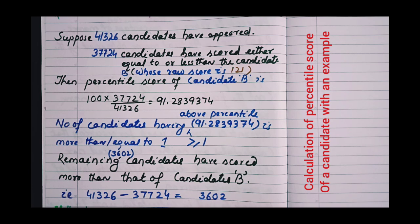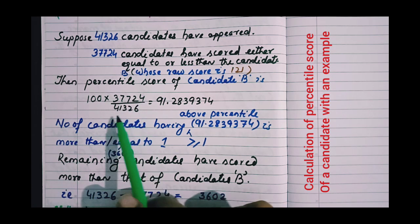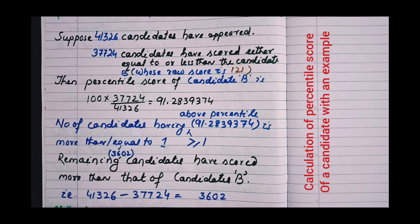That can be calculated by subtracting 37,724 from 41,326. You see, 41,326 minus 37,724 gives 3,602. This number of candidates have secured more than that of candidate B.